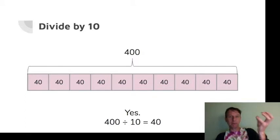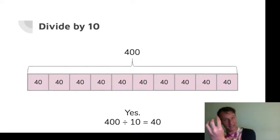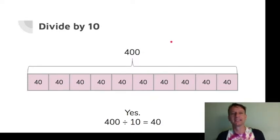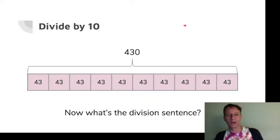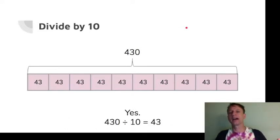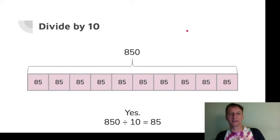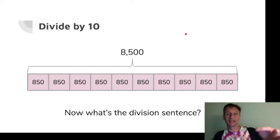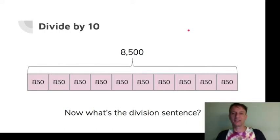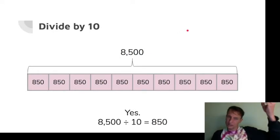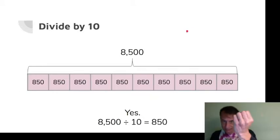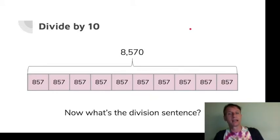Picture the place value chart in your mind: 4 dots in the hundreds place, divided by 10, they go down to the tens place. It's beautiful — the circle is complete! So 430 divided by 10 is 43. 850 divided by 10 is 85. And 8500 divided by 10 is 850. The answer's staring you in the face. Picture that divide-by-10 slide going down the place value chart.